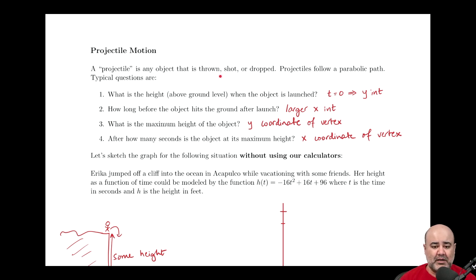So if we throw something off the top of a ledge, or maybe we shoot something, or we drop something off the top of a building, what was the height above ground level when the object was launched? So maybe you throw something off the top of a building. How high is the building when you throw the ball off the top of a building?